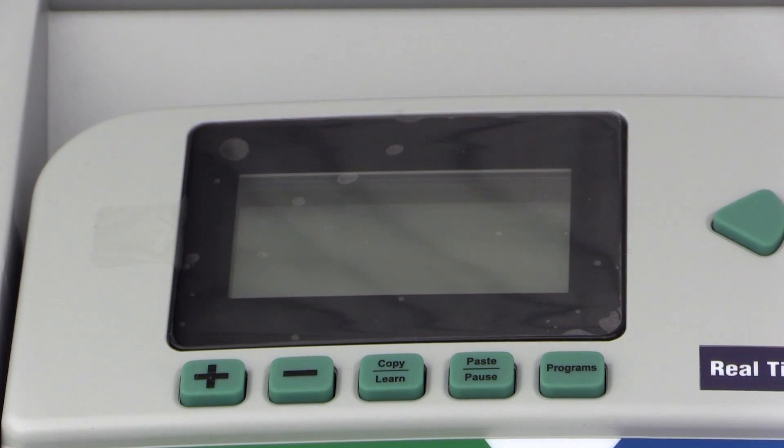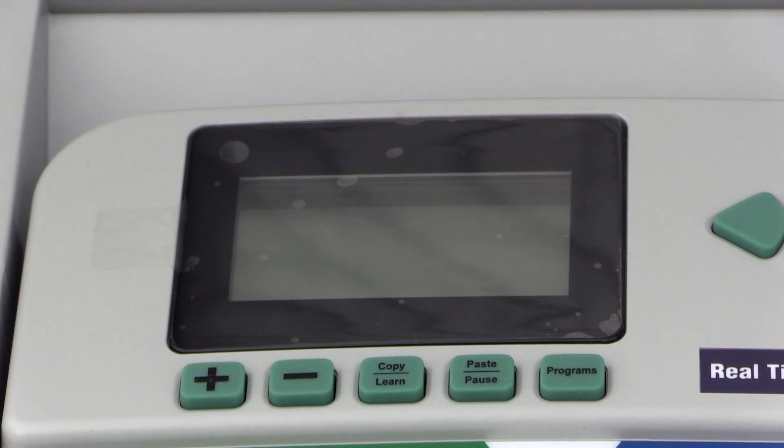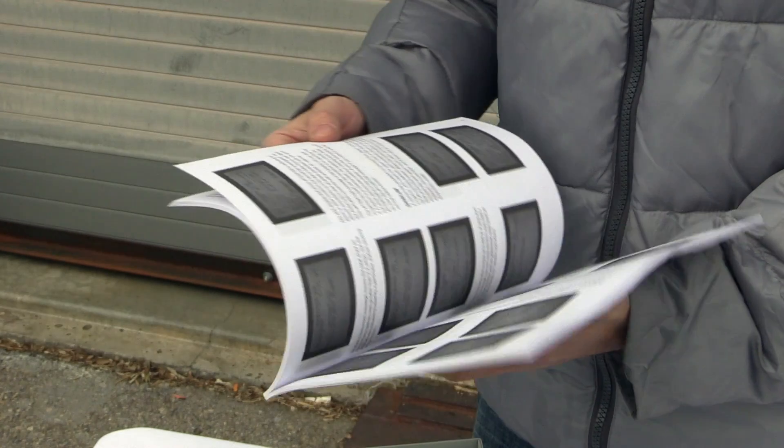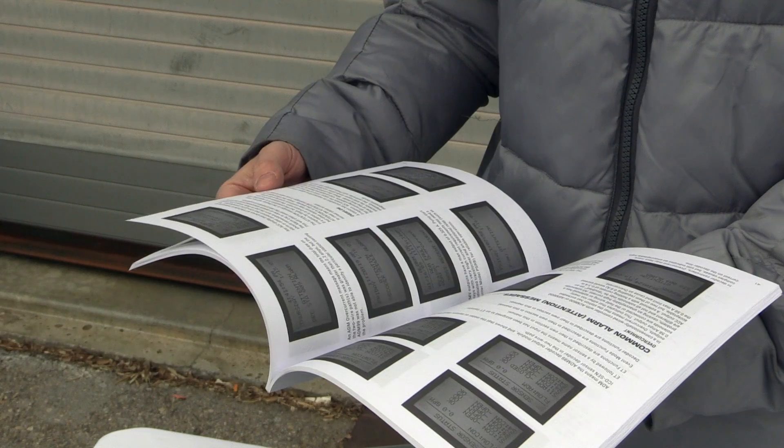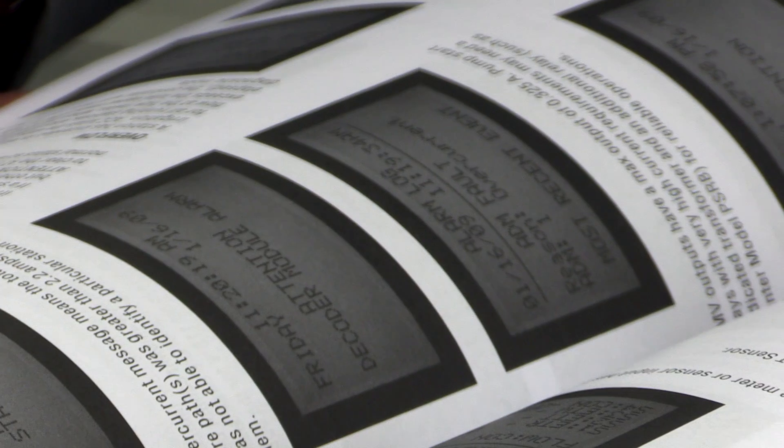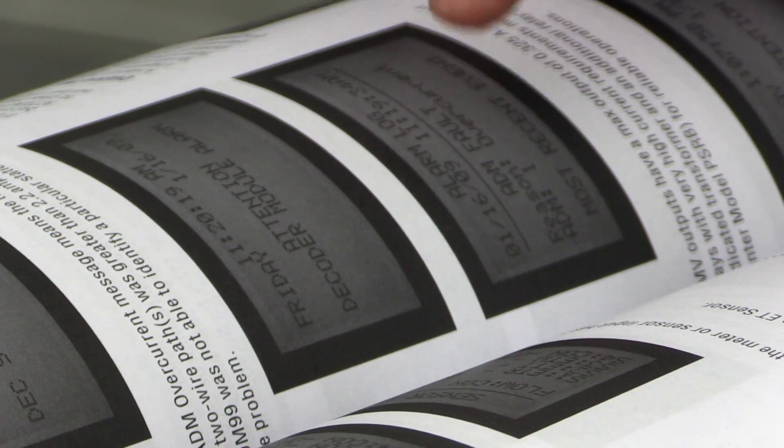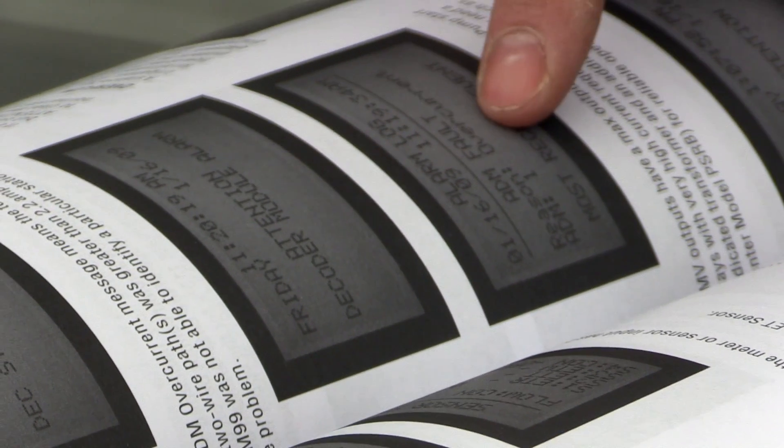Note that many controllers have onboard diagnostic systems that can help you identify the type of fault and where it might be located in the system. Always refer to the manufacturer's manual to take advantage of these features. The diagnostics will not tell you how to solve the problem, but they will help you to know where to look.